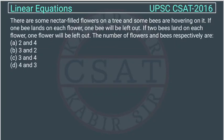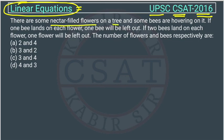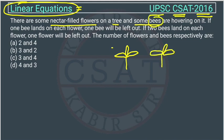This is a linear equation type of question asked by UPSC in their CSET exam of 2016. There are some nectar-filled flowers on a tree and some bees are hovering on it. So there are some flowers and there are bees.